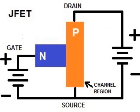Electrons still flow from source to drain, but this time the gate is reverse biased with positive voltage controlling the channel resistance.